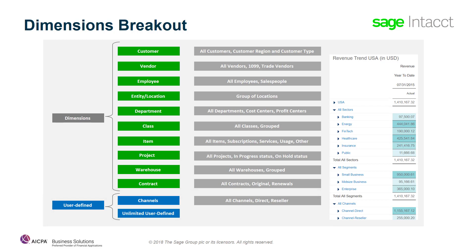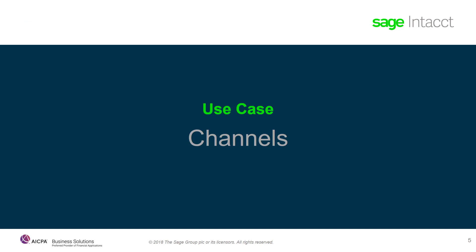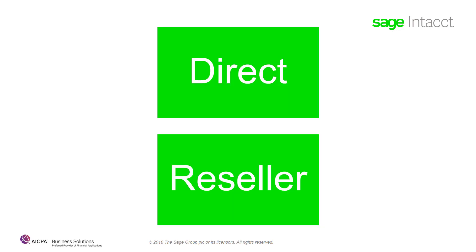Let's move on to our use case. In this use case example, standard dimensions were not enough to accomplish the business needs of a growing and changing business. They need to track various channels for their business so they can have better insights into their reporting by filtering on the new user-defined dimension using Sage Intacct's dynamic filtering. Based on their business model, they need to identify their customers as either direct channel or reseller channel.